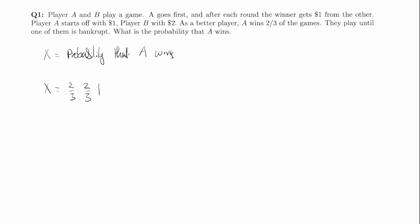What happens if A loses the first game? If A loses the first game then A is bankrupt so they stop playing. The only other scenario to consider is when A wins the first game and B wins the second game. That has a probability of two thirds times one third. In that case A is back at one dollar, so A's probability of winning is just x — it's the same as it was in the beginning.